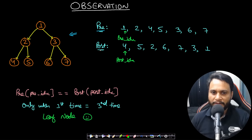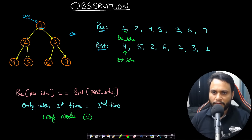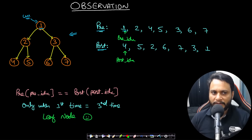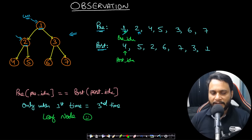In the second observation, consider the reference tree. The root node is identified as the first node of preorder or the last node of postorder. Once we identify root node 1, we make it and go left, incrementing the pre-index to 2. We make node 2 and again go left, incrementing to 4.